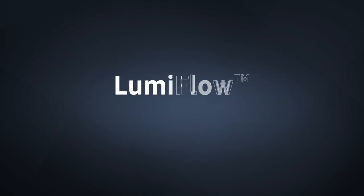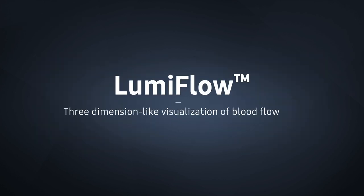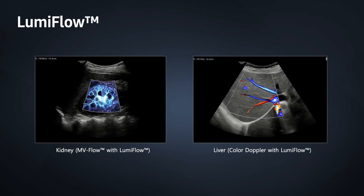Lumi-Flow displays a three-dimensional-like appearance to 2D color Doppler. Lumi-Flow electronically integrates light and shadow effects to transform the appearance of flat images into vibrant three-dimensional objects. The dimensional enhancement aids in quickly understanding vessel boundaries and spatial comprehension of complex vascular anatomy.